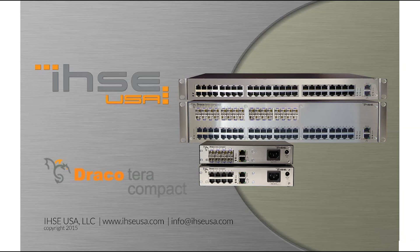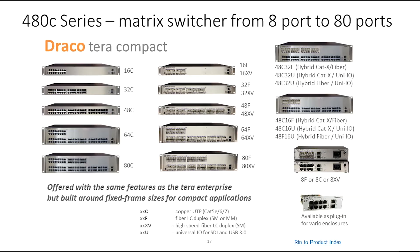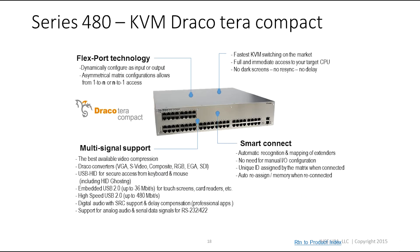The first switch family to introduce is the compact series. This series comes in cat-x, fiber, hybrid — which is cat-x and fiber in the same switch — uni, which is blank slots to customize with SFPs being cat-x, fiber, or mini-BNCs for SDI, HD or 3G SDI, USB 3.0, or XV fiber at 6 gigabits per second. All 480 series switches have flex port technology, multi-signal support, and smart connect, which, based on being a MAC address switch, automatically recognizes what's being plugged in and maps the extenders, making it the fastest KVM switch in the market.